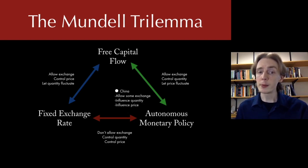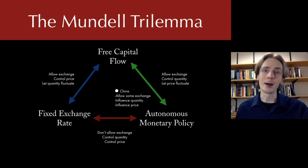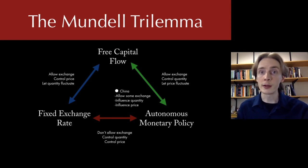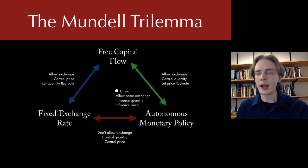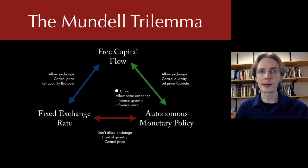There are also hybrid regimes — you can hit the middle of the triangle by going halfway on all three. China does this with its crawling peg, sometimes called a managed float. It doesn't make any explicit promises about the exchange rate, but it manages the trade-off between autonomous monetary policy and fixed exchange rates on the fly. China also pretty severely restricts free capital flow — it's very difficult for US citizens to invest in Chinese stocks, for example.